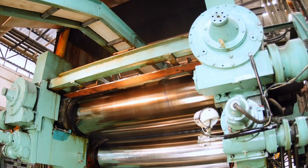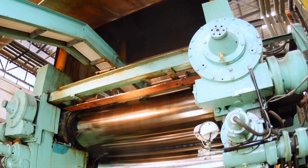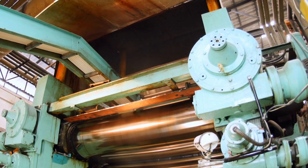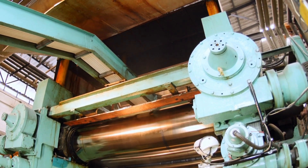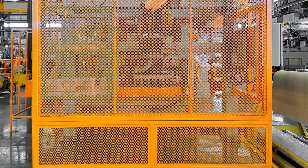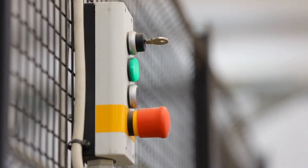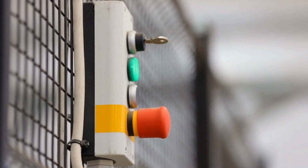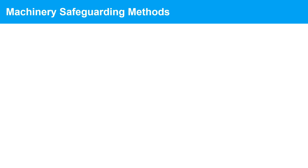Machinery accidents can result in severe injuries or even fatalities, which is why it's crucial to implement proper safeguarding methods to protect workers. Machinery safeguarding methods are essential to protect workers from hazards associated with operating machinery. These methods involve the use of various techniques, technologies, and devices to minimize or eliminate the risk of accidents or injuries when operating machinery. Here are some common machinery safeguarding methods.